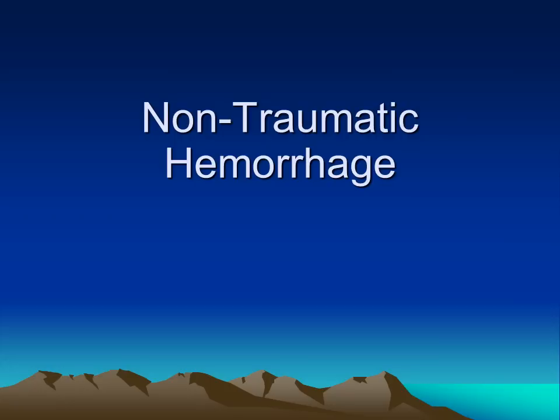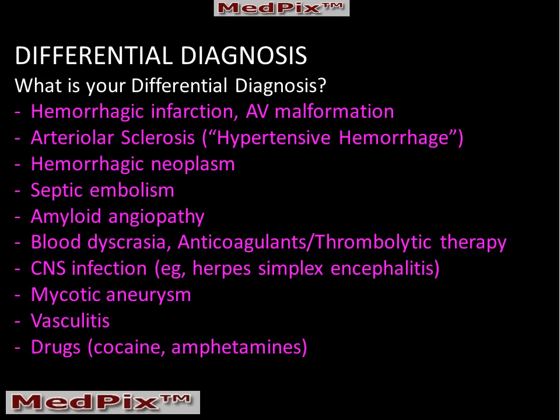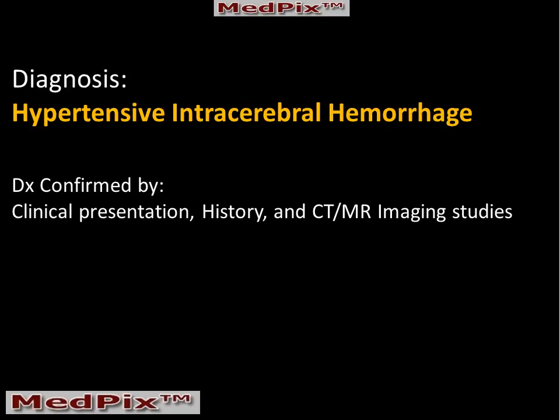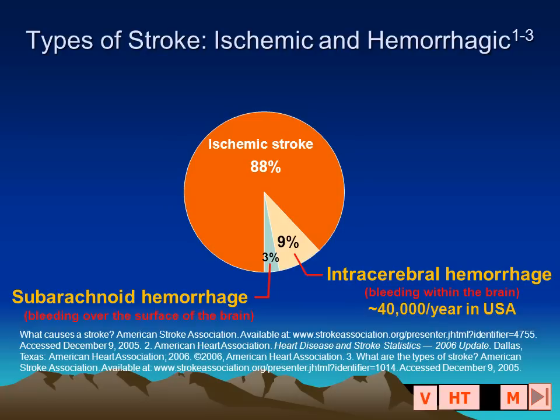So, what is our differential diagnosis for a non-traumatic hemorrhage? The list is very long. But in the context of the patient's history of hypertensive vascular disease, he probably has a hypertensive intracerebral hemorrhage.